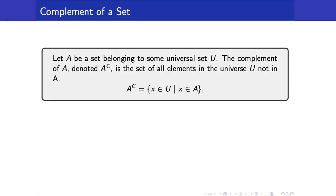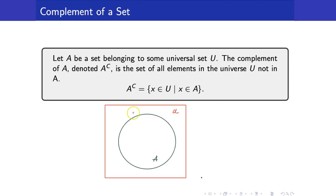Here is a definition of a complement. Suppose that we have a set belonging to some universal set U. The complement of A is the set of all elements in the universal set not in A. That is, we want the set of elements outside of A.